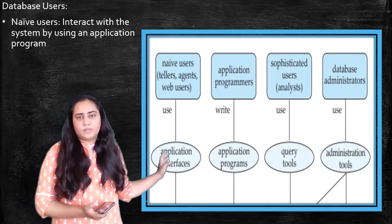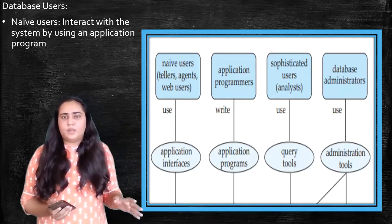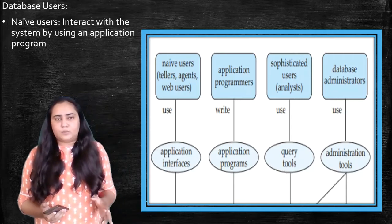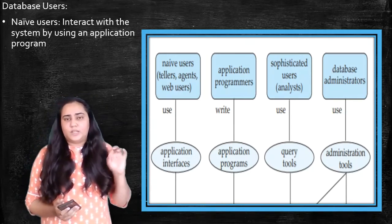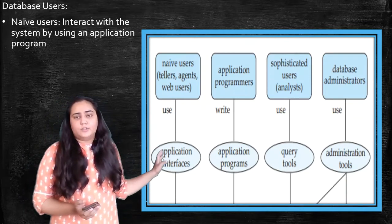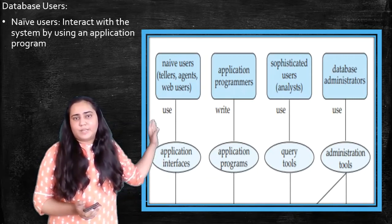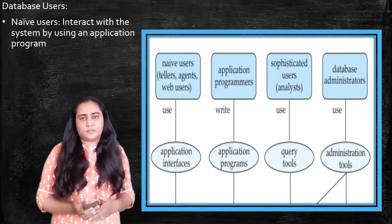So such users are called naive users and they use application interfaces. Because these interfaces are nothing but an attractive looking application where you can see lots of buttons so that you can click on them and perform your tasks. So application interfaces are used by these naive users. They interact using these interfaces.